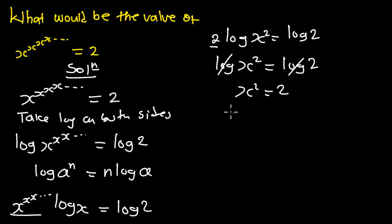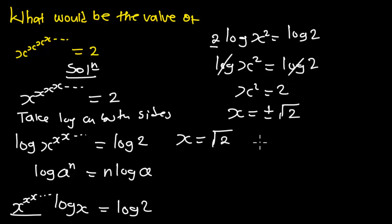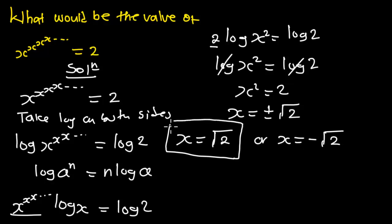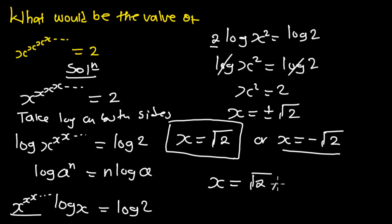To find x, we take the square root of both sides, giving x equals plus or minus the square root of two. We only consider the positive value, x equals square root of two, because negative values are not defined for logarithms. Therefore, our answer is x equals the square root of two. Thank you for watching — if you find this video useful, don't forget to like, subscribe, and comment.